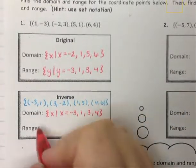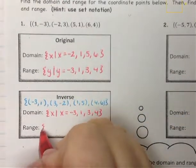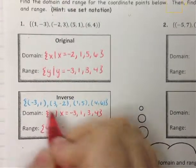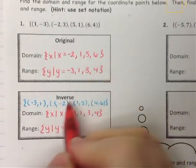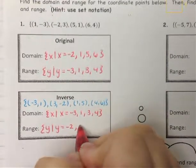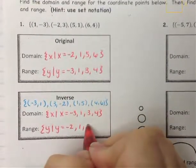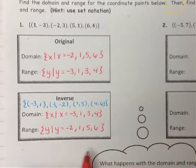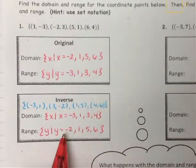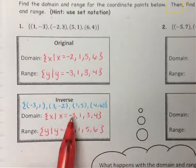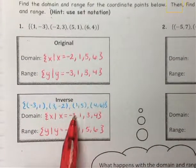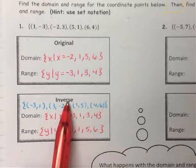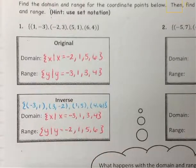Then our range is the y values. So y such that y is equal to — the smallest one is negative 2, then 1, then 5, then 6. We have 4 coordinates and 4 values for our domain. Therefore, the inverse is going to be a function.